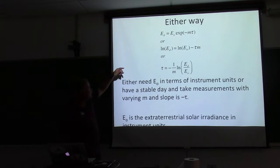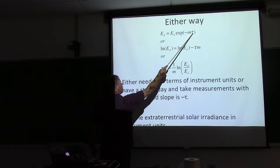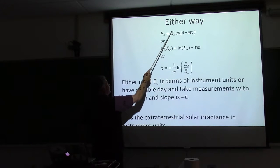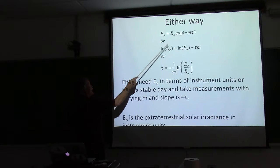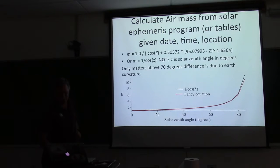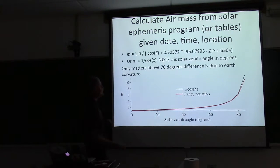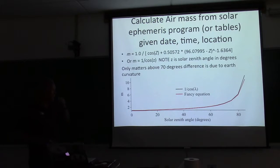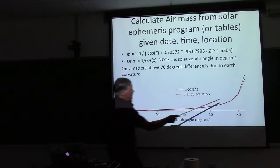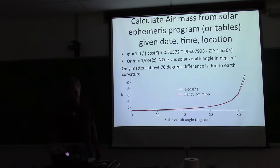Either way you do it, this is the equation I showed you before: you have the total optical depth, the air mass, a calibration coefficient in instrument units, and what you measure at that time — so you can convert it to optical depth. The air mass is one over cosine theta. A fancier equation accounts for Earth curvature, so if you're measuring optical depth at very low sun angles, the curvature of the Earth matters. But it doesn't matter until you're above about 75 degrees or so.